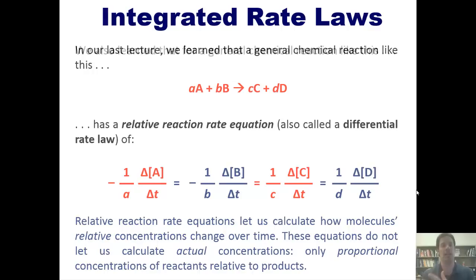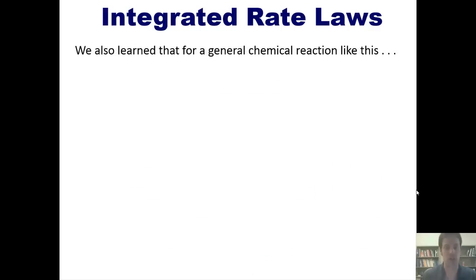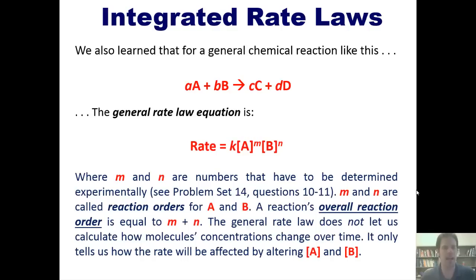So in an earlier lecture, we also learned that for a general chemical reaction, such as this one, the general rate law equation, which is a little bit different from the relative rate equation, is this. Where M and N are numbers that have to be determined experimentally. In other words, M and N are not the same as coefficients A or B in the balanced stoichiometric equation, although sometimes they occasionally can be, but if so, it's completely coincidental. M and N are called reaction orders for A and B. A reaction's overall rate order is equal to M plus N. The general rate law does not let us calculate how molecules' concentrations change over time. It only tells us how the rate will be affected by altering the individual concentrations of A and B.